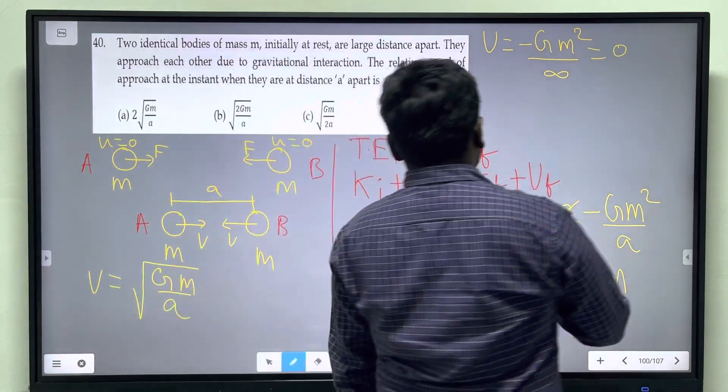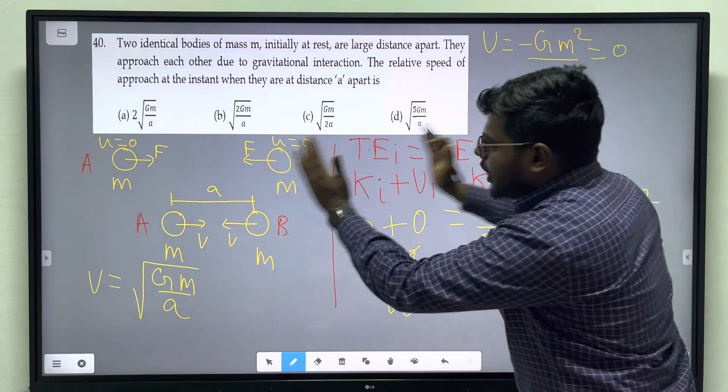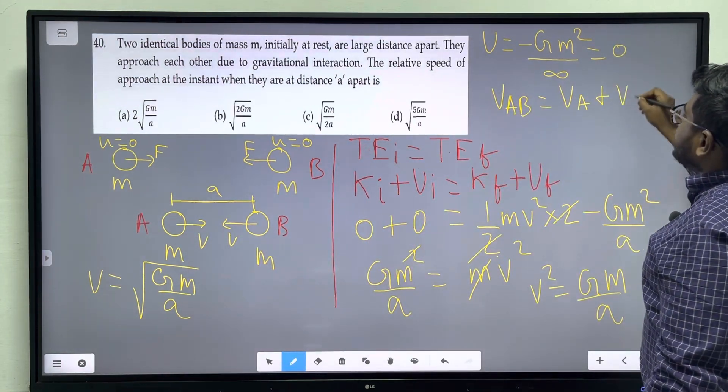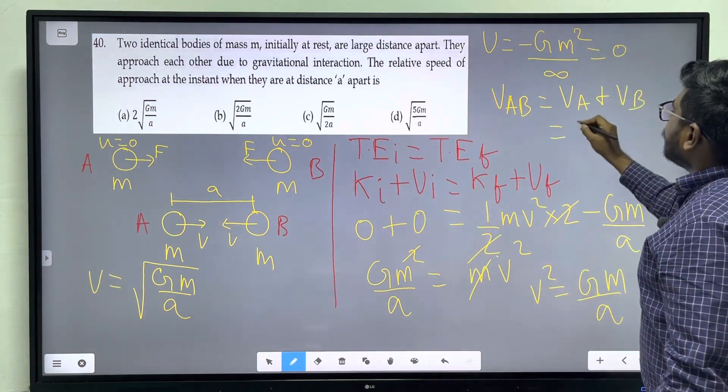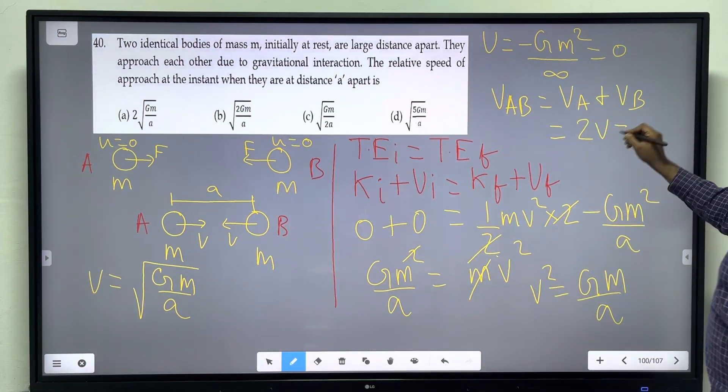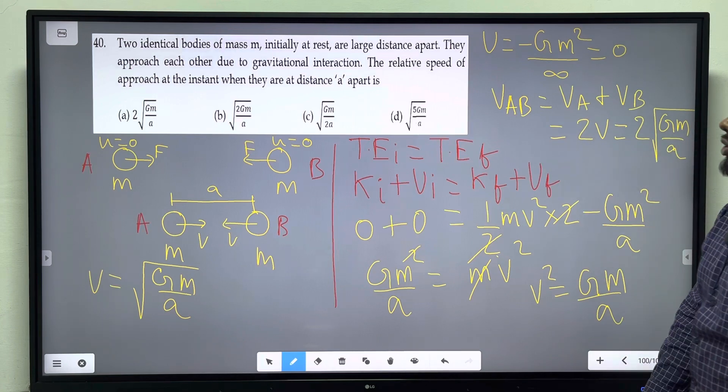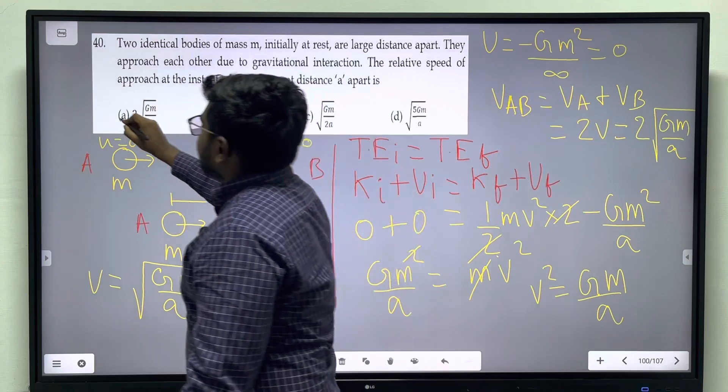So we know that VAB, two towards each other, VA plus VB. Two equal to V, then 2V. So 2 into root of GM divided by A. So in the answer 2 into root of GM divided by A.